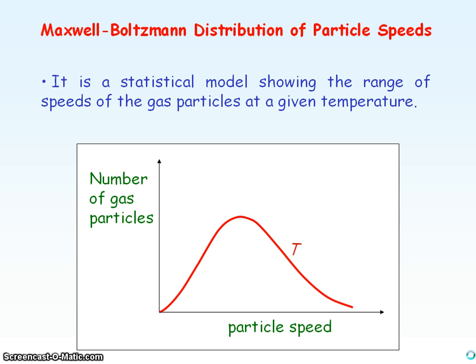The Maxwell-Boltzmann distribution is a statistical model showing the probability of a gas particle having a certain speed at a given temperature. The peak is the mode, the most probable speed, the most common speed that the gas particles will have. And the RMS speed is above the modal speed.